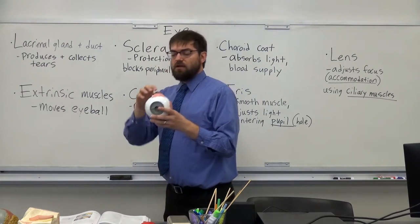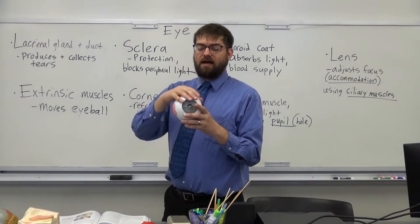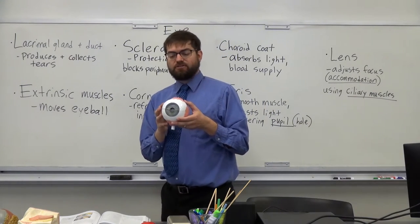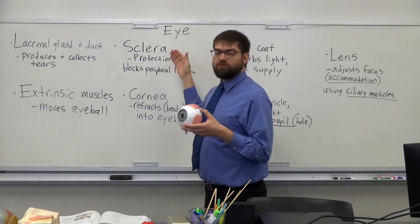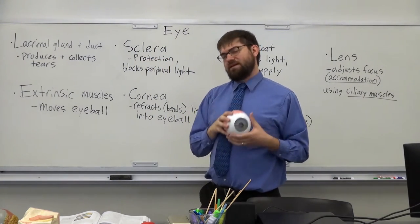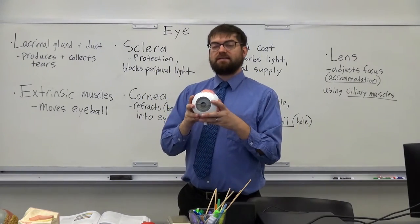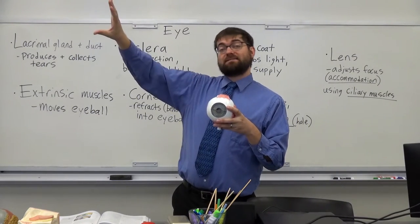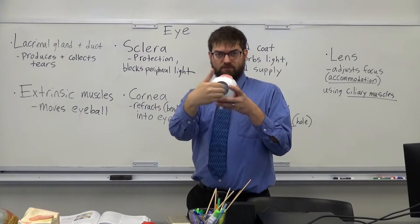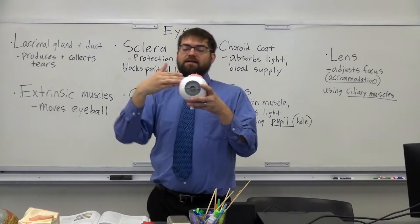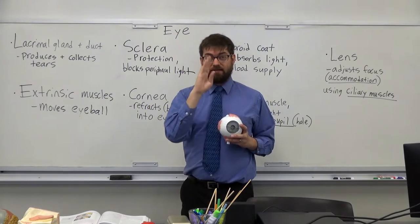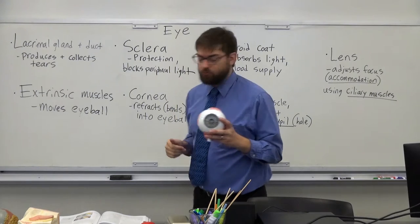Surrounding the eye we have this white outer layer called the sclera. The sclera is very thick to act as a protective layer, and it's white because white reflects light. As light comes in on the periphery, it bounces off, so we don't want light entering the side of the eye — we only want light to enter through the front.